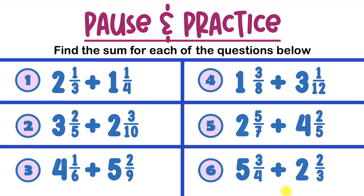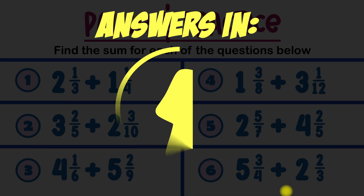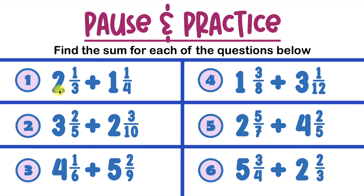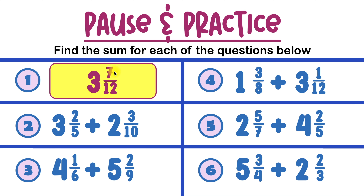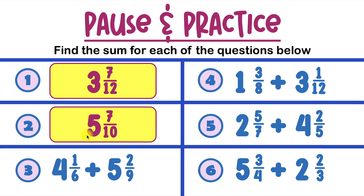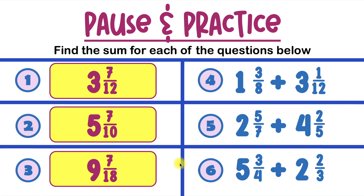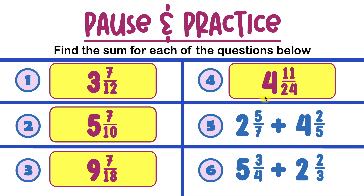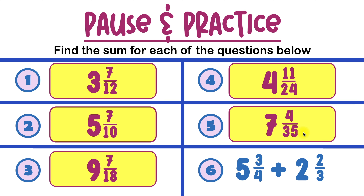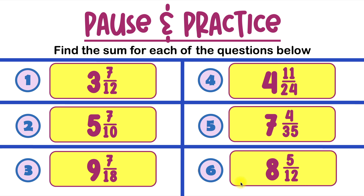Here's your pause and practice. Hit the pause button and try these 6 questions. Once you're done, hit the play button to see if your answers are correct. Ready, set, go! Let's take a look at our answers. Number 1 is 3 and 7 over 12. Number 2 is 5 and 7 tenths. Number 3 is 9 and 7 over 18. Number 4 is 4 and 11 over 24. Number 5 is 7 and 4 over 35. And number 6 is 8 and 5 over 12.